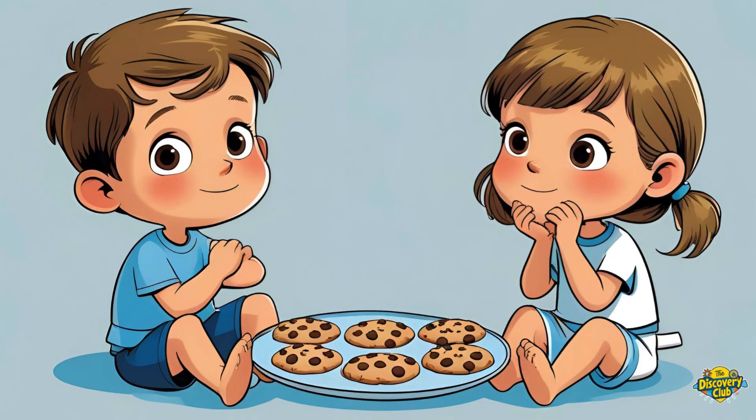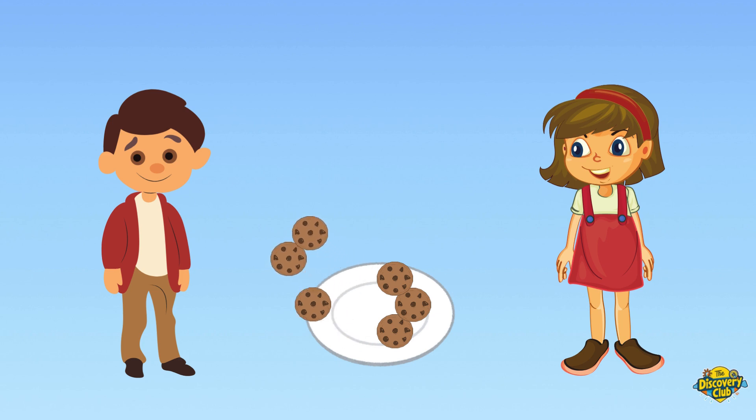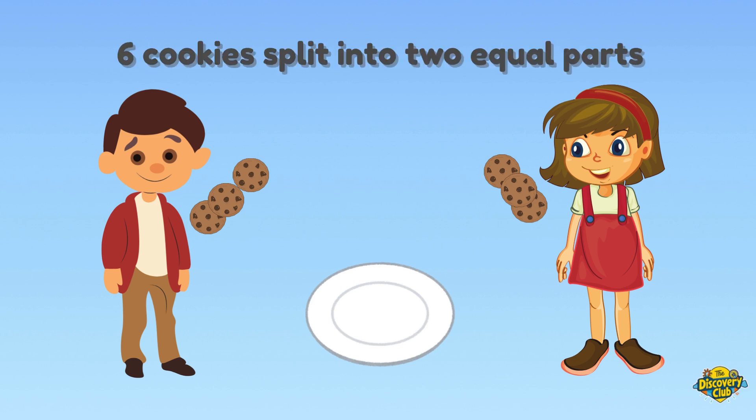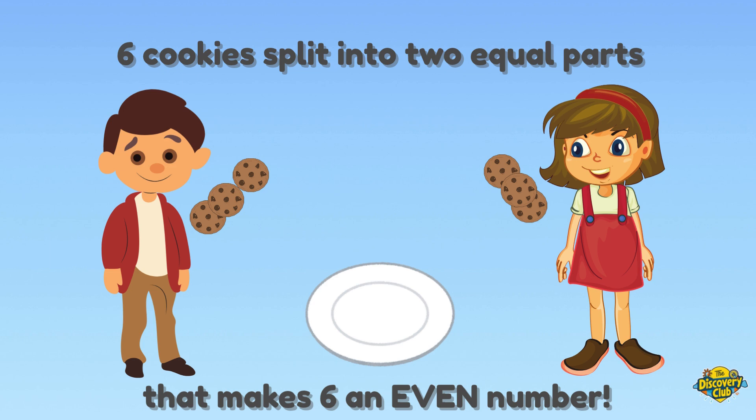Now you have six cookies. Can you split them evenly among two friends this time? Yes! Three for you, three for you. No cookies left behind. That means we can split six into two equal parts. A number like that is called an even number.